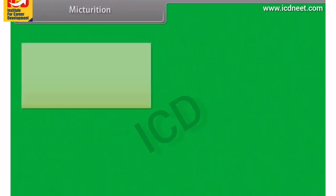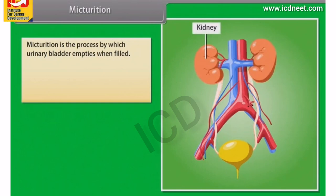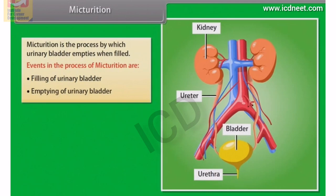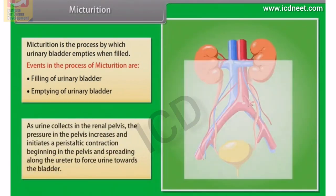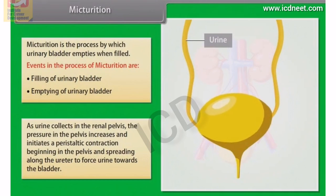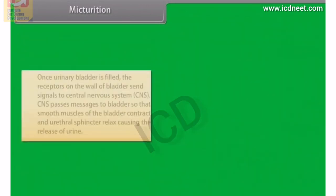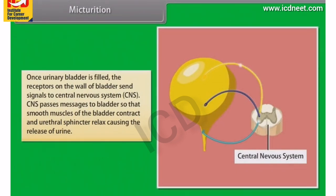Micturition is the process by which the urinary bladder empties when filled. The events are: filling of the urinary bladder and emptying of the urinary bladder. As urine collects in the renal pelvis, pressure increases and initiates a peristaltic contraction beginning in the pelvis and spreading along the ureter to force urine towards the bladder. Once the bladder is filled, receptors on its wall send signals to the central nervous system (CNS), which passes messages to the bladder so that smooth muscles contract and the urethral sphincter relaxes, causing the release of urine.